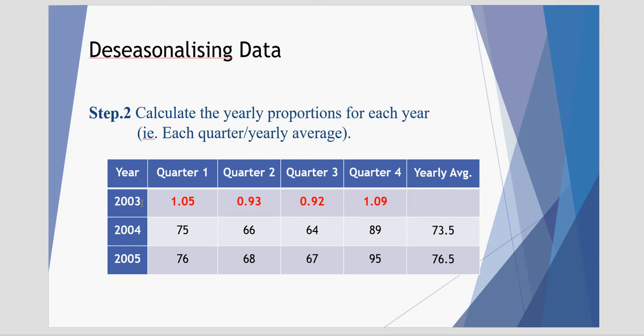There are our yearly proportions for 2003. For 2004, we do the same thing, but this time we use the yearly average for 2004. In the first quarter, we take 75,000 and divide it by 73.5 thousand.